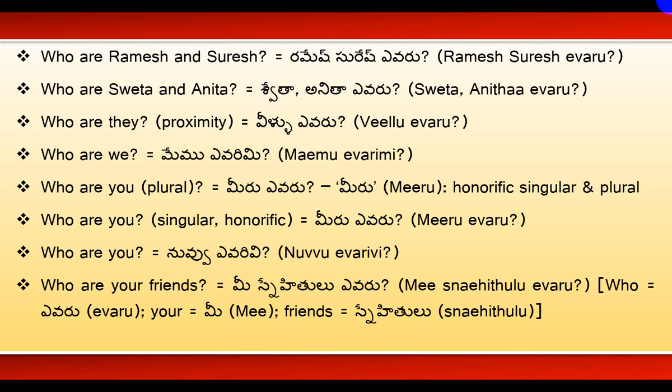Who are we? means Memu Yavarimi. 'Who' means Yavaru, but when we use this word along with Memu or Manamu, we use the suffix 'mi' after Yavaru. So Yavaru plus mi becomes Yavarimi. Memu Yavarimi — that means 'Who are we?'